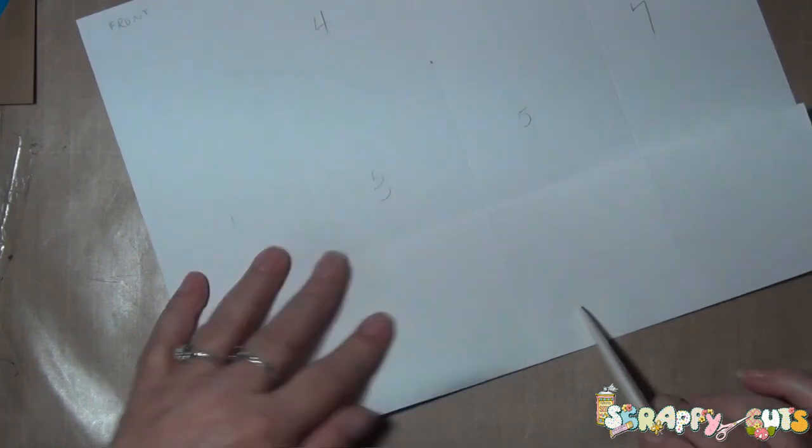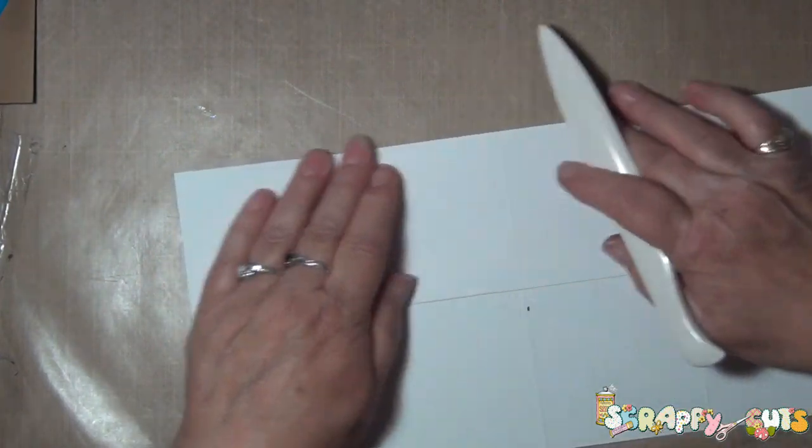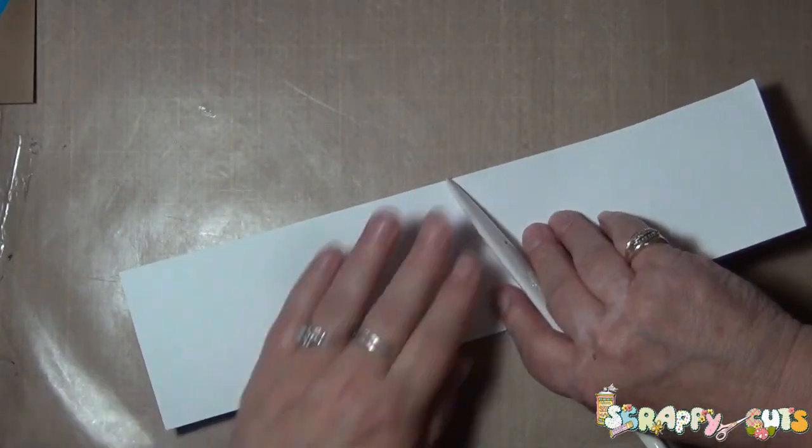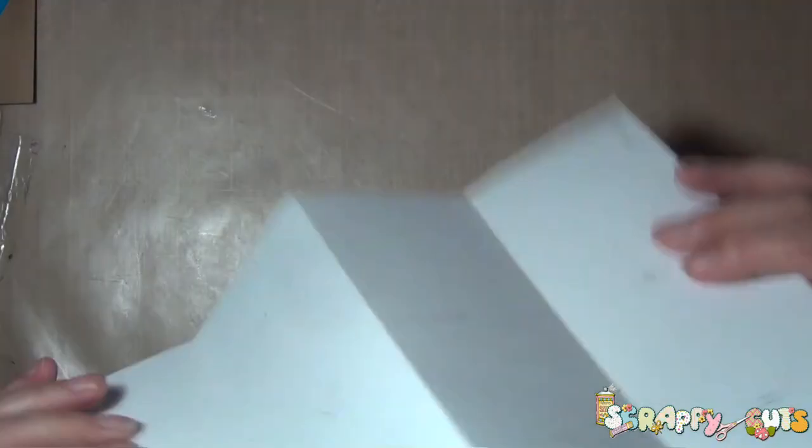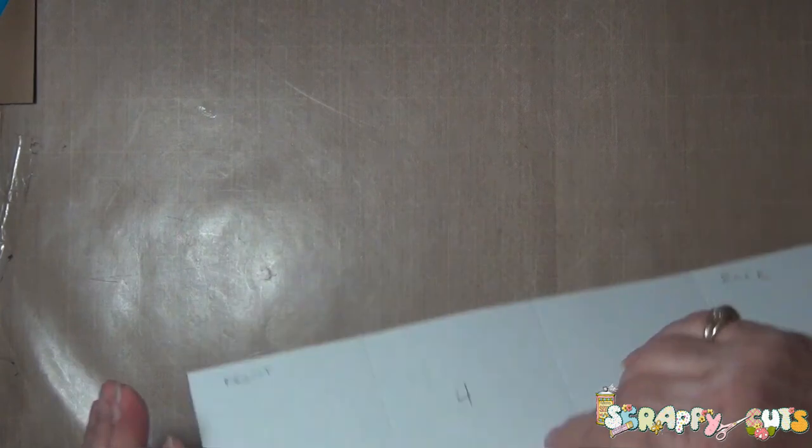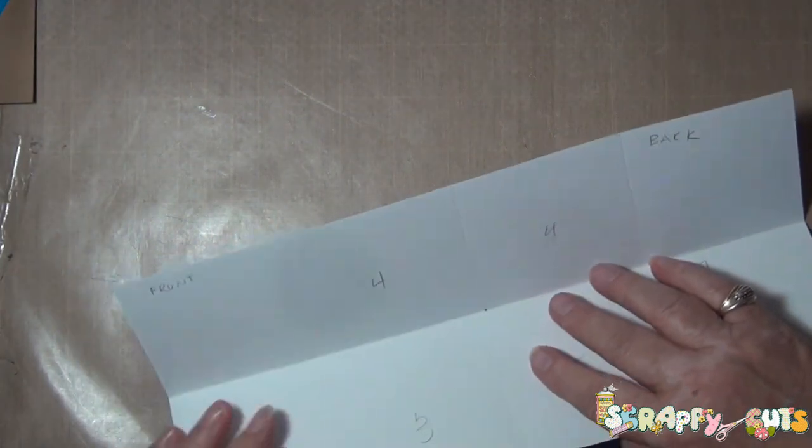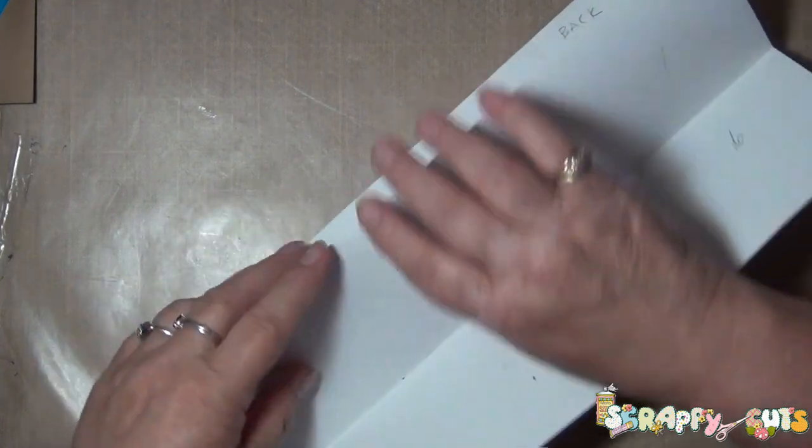And after you have marked each one of your squares, then you're going to crease on the score lines of each row of squares. Repeat this until all of the rows are creased. Unfold your piece of paper by one so that three of the folds are still bundled together.